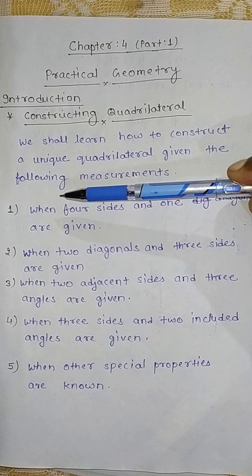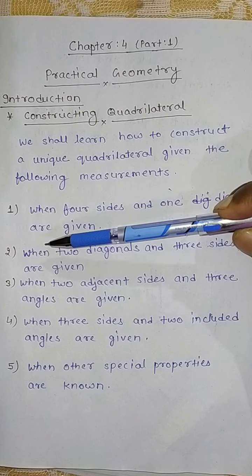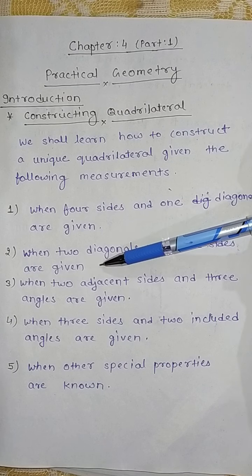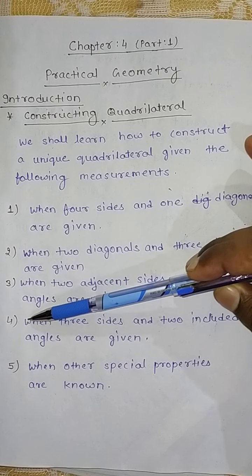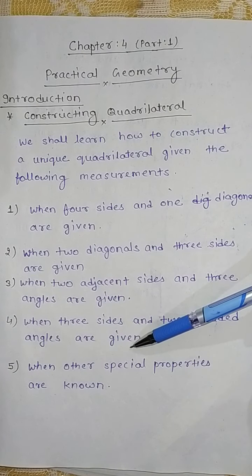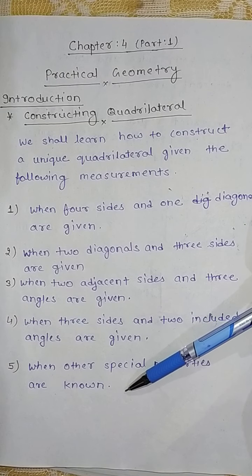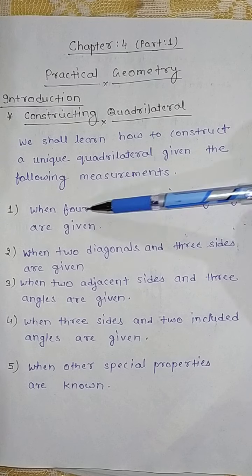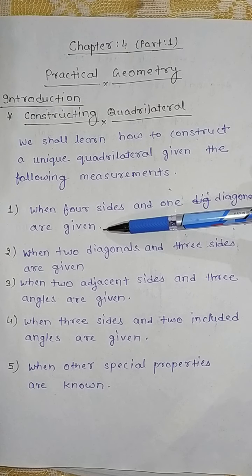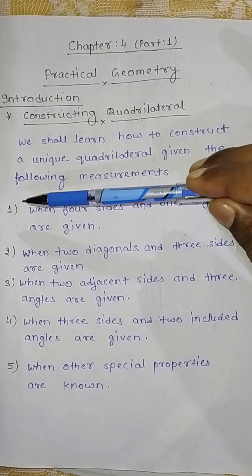The first case is when four sides and one diagonal are given. Second, when two diagonals and three sides are given. Third, when two adjacent sides and three angles are given. Fourth, when three sides and two included angles are given. And the fifth case is when other special properties are known. In this part, we will discuss point one — where four sides and one diagonal are given — and also cover Exercise 4.1 related to this first point.